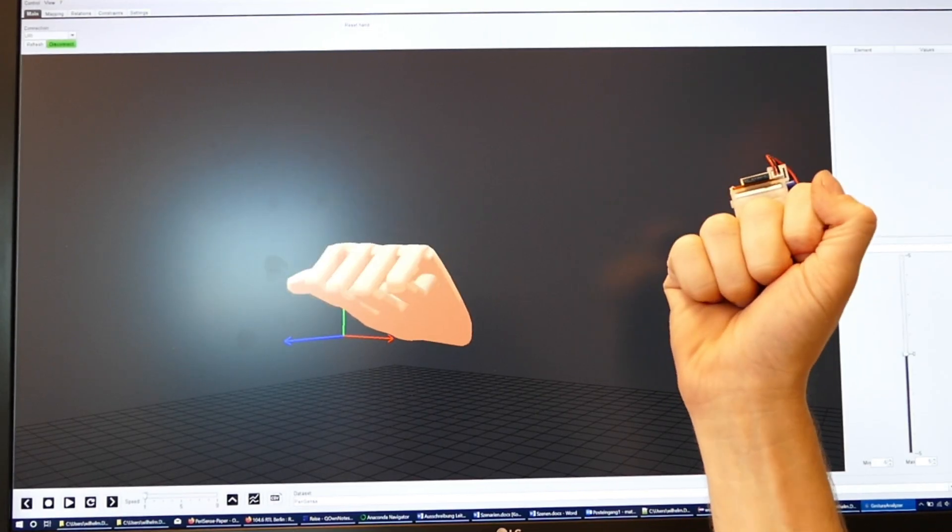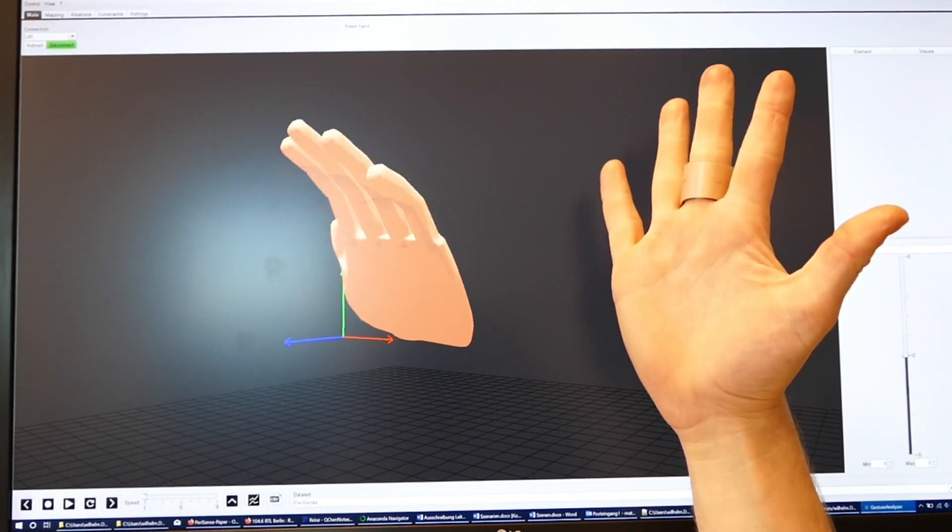In difference to most ring devices, PariSense can sense the finger movement of the wearing and its adjacent fingers.